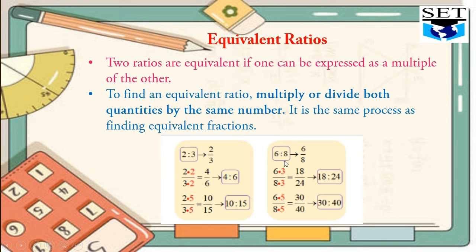Now, the next example: the ratio 6 to 8 is given. In order to find its equivalent ratio, we have to multiply or divide by the same number. Here we are multiplying it. In the first one, we have multiplied by 3. 6 times 3 is 18, 8 times 3 is 24. So 18 to 24 is the equivalent ratio of 6 to 8.